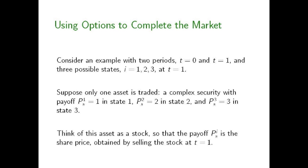To begin with a simple example, let's go back to the example from part one of the presentation, where we have two periods: today, period T equals zero, and the end of the investment horizon, period T equals one — maybe a year from now. Let's imagine that there are three possible states of the world, i equals one, two, and three, looking ahead from today till the end of the horizon. So we can think of there being a good state, a bad state, and a state somewhere in between. Let's suppose that only one asset is traded in financial markets — a complex security that makes payments in all three states of the world.